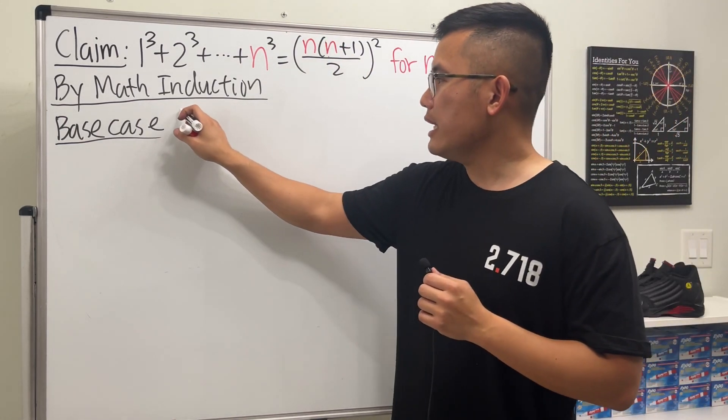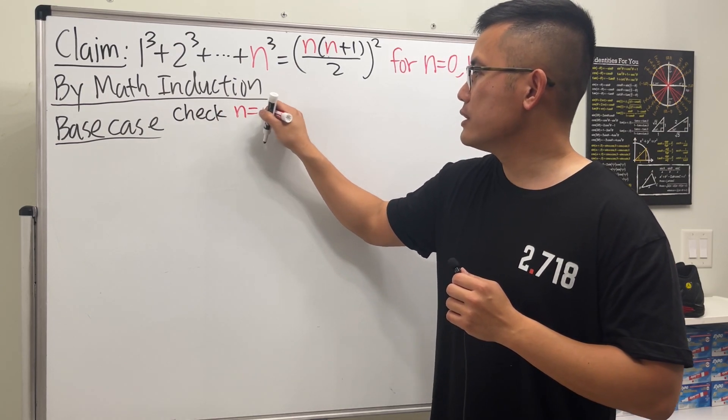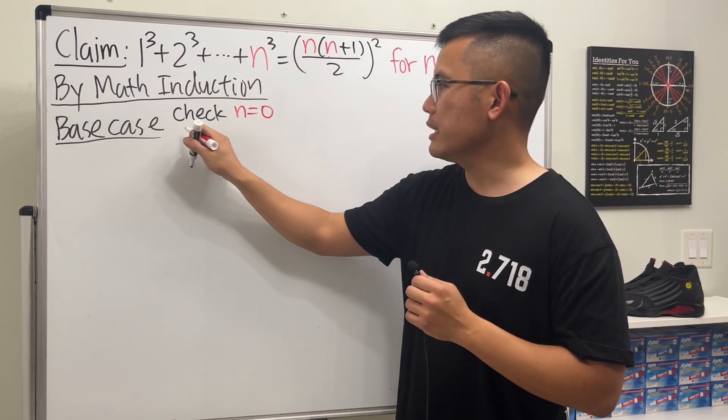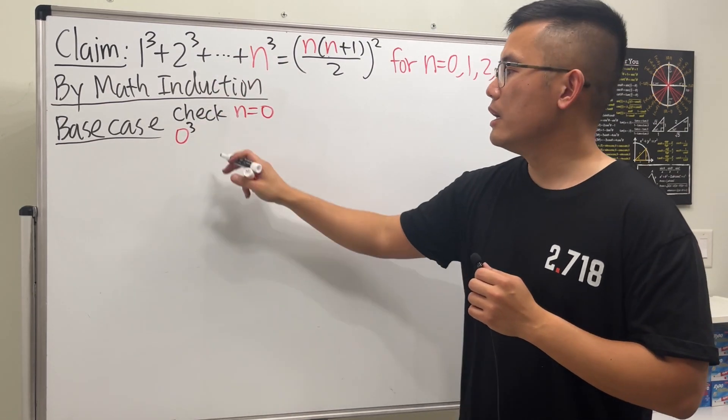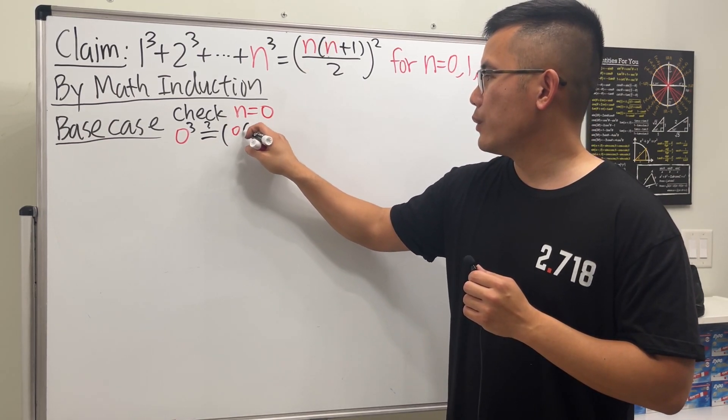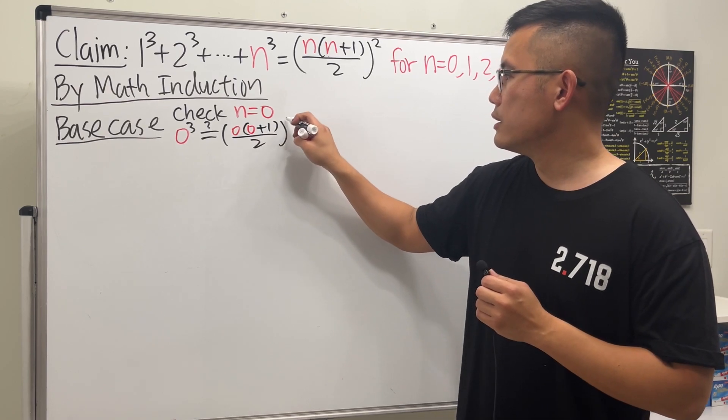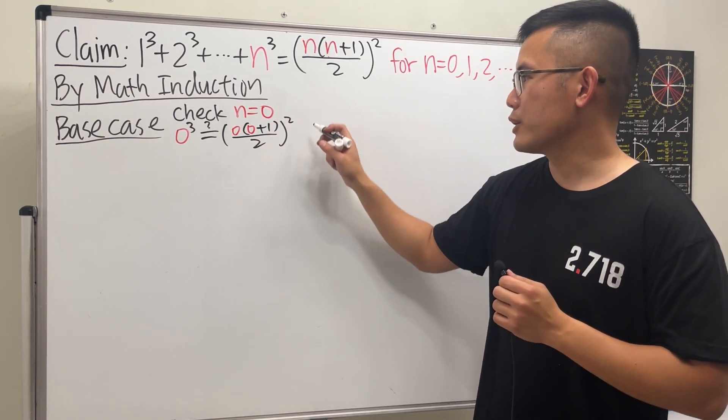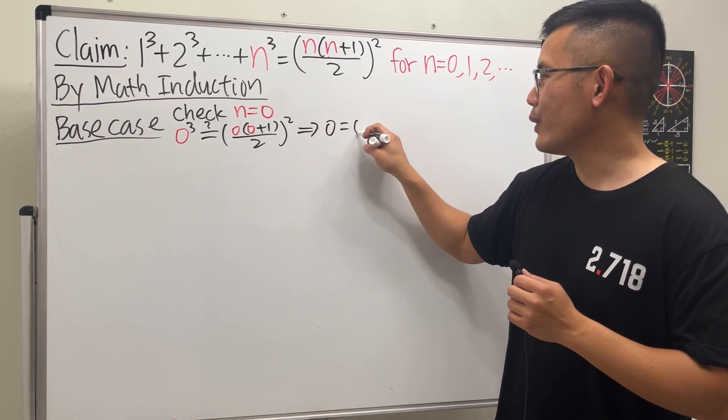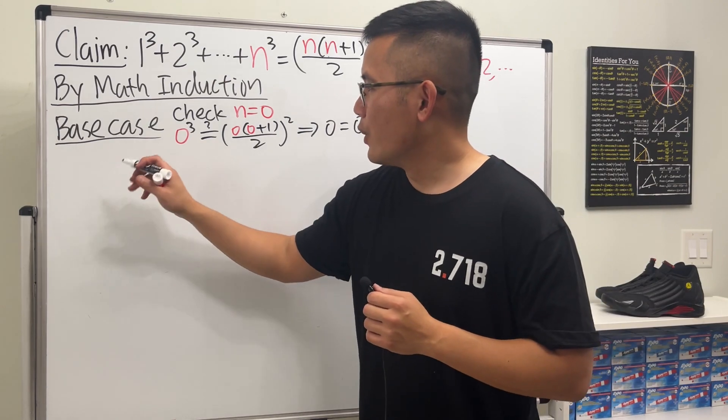Because the way I wrote down the formula, we say that this is true for n = 0, 1, 2, 3, and so on. We want to check if the formula is true for the first n value that we have. So that is, we have to check if n = 0 will satisfy this formula. Let's go ahead and plug in. We will get 0³ on the left-hand side. Is that equal to putting a 0 in here, and then we have (0+1)/2 squared? Is this true? Congratulations, it is true, because 0 is indeed equal to 0. So yeah, base case check.